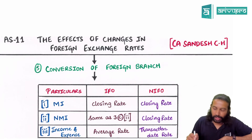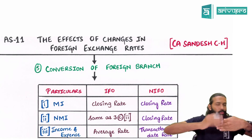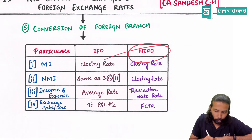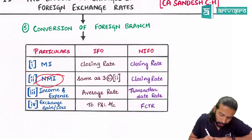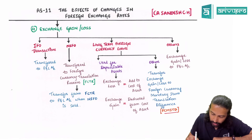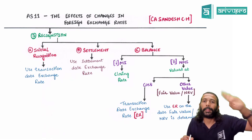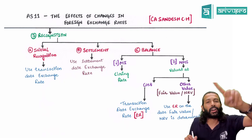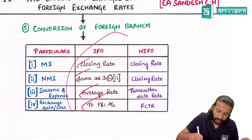Next, conversion of a foreign branch. When preparing financial statements, you must combine the Indian entity's data with the foreign branch's data. Since the foreign branch data is in foreign currency, you need to convert it. First, determine whether the foreign branch is an Integral Foreign Operation (IFO) or Non-Integral Foreign Operation (NIFO). For IFO: monetary items are converted using the closing rate; non-monetary items follow the 3C2 rule — if shown at cost, use the transaction date exchange rate; if valued at NRV or fair value, use the exchange rate on the date of that valuation. Income and expenses are converted using the average rate. Exchange gain or loss is transferred to P&L.